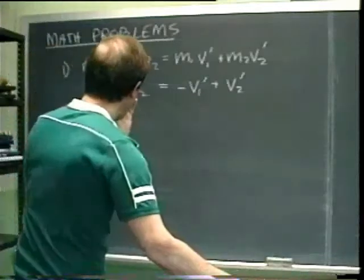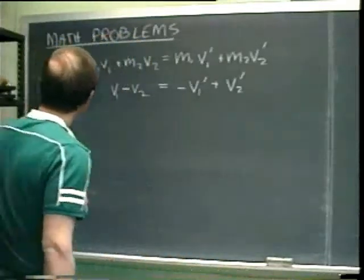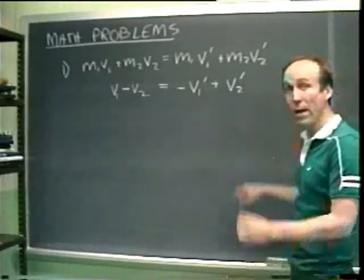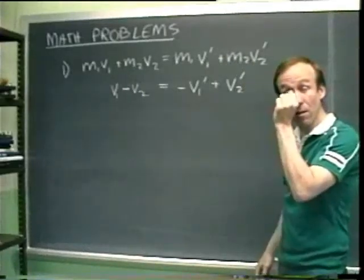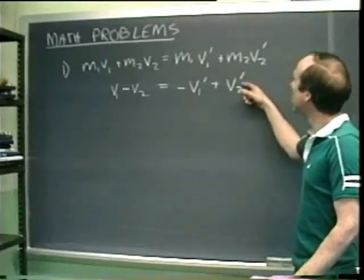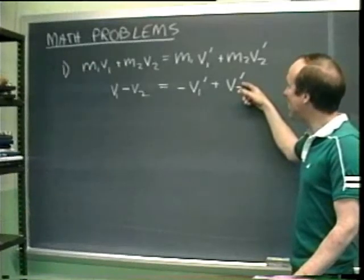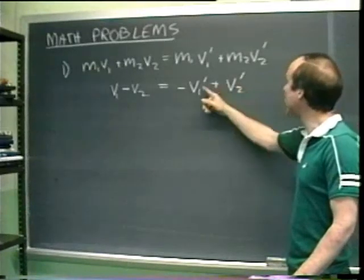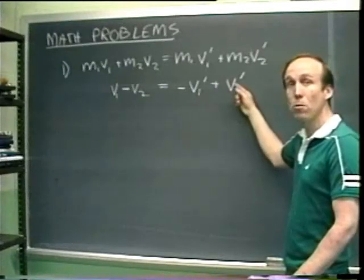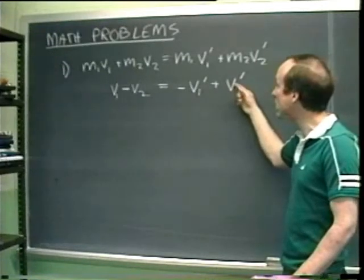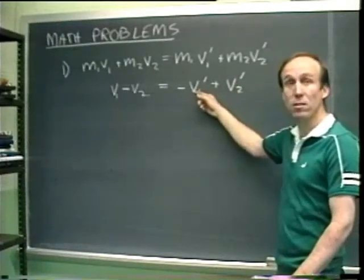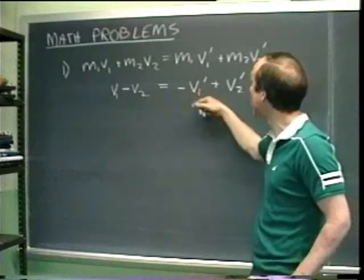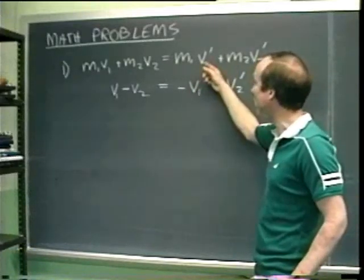Problem number one says: consider M1, M2, V1, V2 known. Combine the following equations and solve for V1 prime and V2 prime. They give us these two equations. We've got two equations, two unknowns, both linear equations — nothing squared in either equation. In neither equation can we just directly solve for one of the unknowns, since both unknowns appear in each equation.